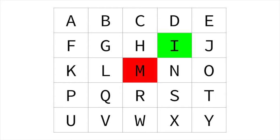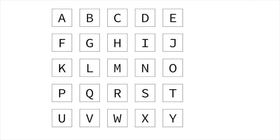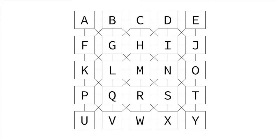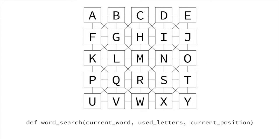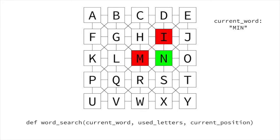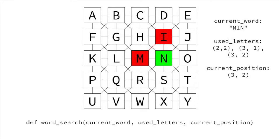If you think of this board as a graph where the letters are vertices and links to neighbors are edges, this is similar to depth-first search. DFS suggests a recursive algorithm. Here's a recursive function we could use: 'current word' will be the word we're currently building, 'used letters' will be all the positions we've visited building this current word, and 'current position' will be where we currently are. The function will return the list of words we can create from this current state by recursively calling the function on all of the current position's neighbors.